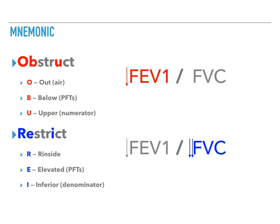In obstruct, the O stands for out. It's harder to get the air out. In other words, it's harder to exhale. The B stands for below because the PFTs, i.e. FEV1 over FVC, that entire ratio is down or below. And the reason that the entire ratio is down is what the U stands for. It's upper or the numerator. The upper number in the ratio is the reason that drives obstructive pattern.